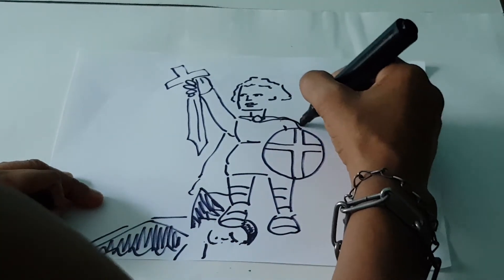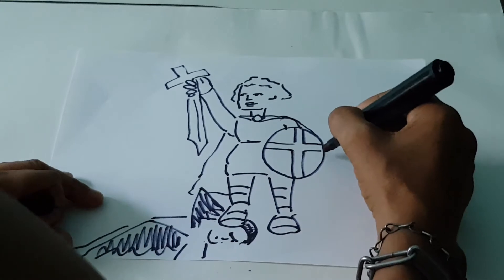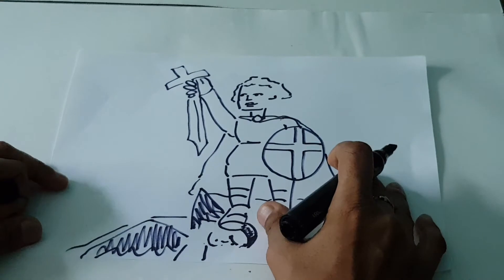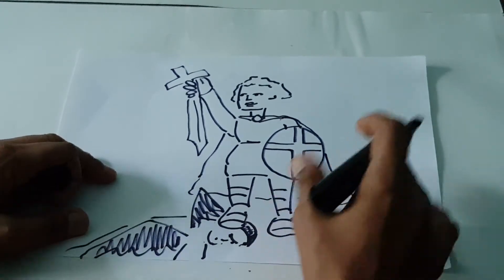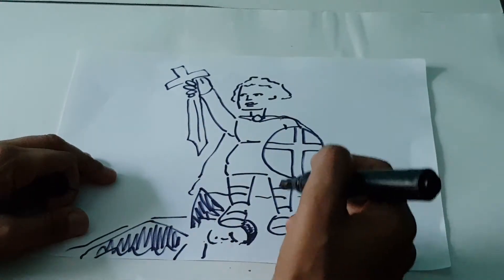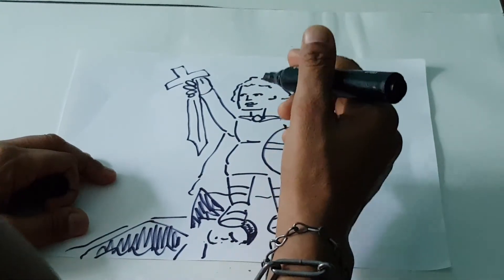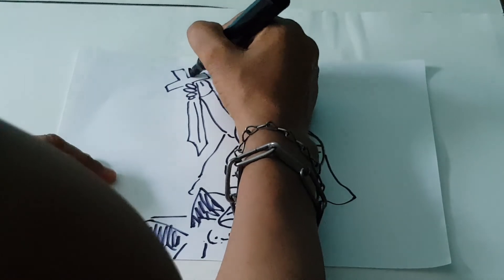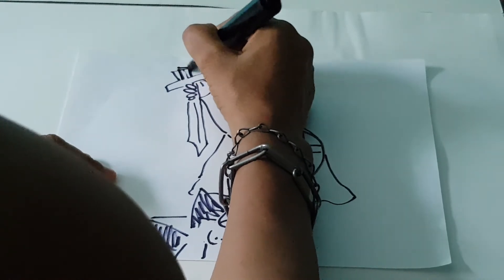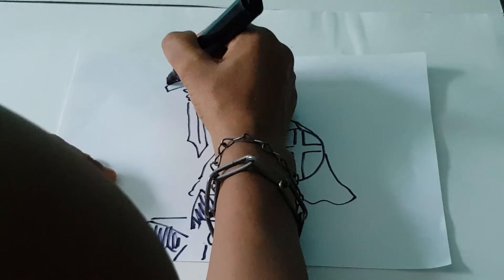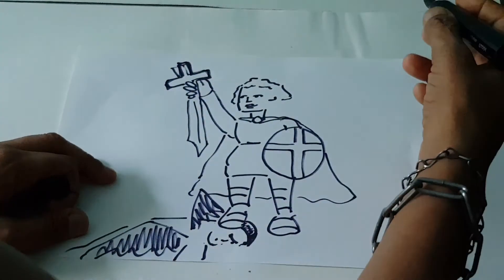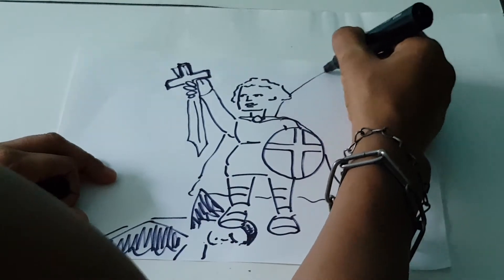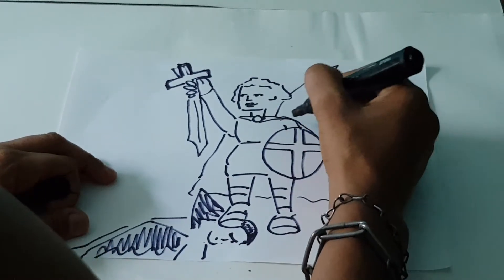And then his cape comes down like this floating in the wind. Then like I said he's an archangel and archangels have wings, so we're gonna draw this side of the wing coming out like this and we have the second wing.